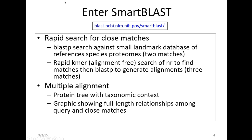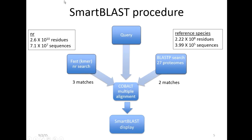You're going to see a protein tree that gives you some taxonomic context, and a graphical display showing the full-length relationships among the query and close matches. The procedure is: run the fast KMR search, run the BLASTP search against 27 proteomes, then use Cobalt to generate the SmartBLAST display. NR has about 2.6×10^10 residues; the reference species proteome database is about 100 times smaller, which is why we can use BLASTP there and still do it quickly.